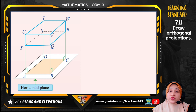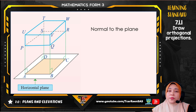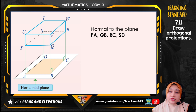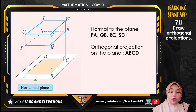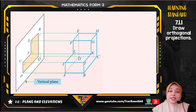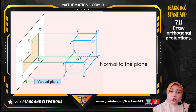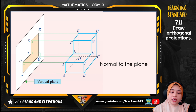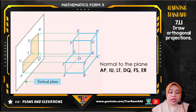For this three-dimensional shape, the normals to the plane are PA, QB, RC, and ST, and the orthogonal projection is ABCD. For the next 3D shape example, you need to state all visible vertices. The normals to the plane include AB, IU, LT, FS, ER, and DQ.